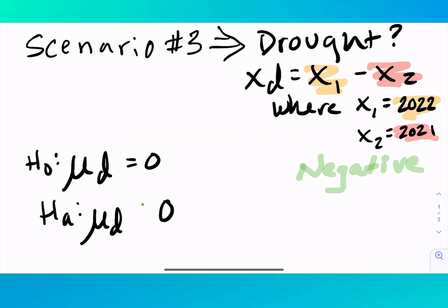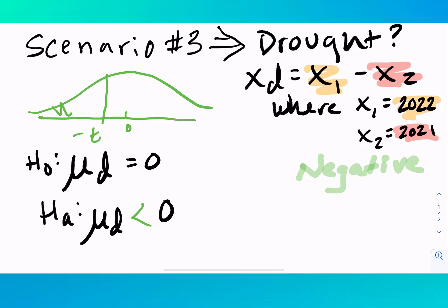So this time we want to see if mu sub d is less than zero. So the area that we're interested in then is going to be to the left of our test statistic. And remember, I said in previous videos that if you have a left tail test, it tends to be you have a negative test statistic. But the main point is with these, it would be to the left.